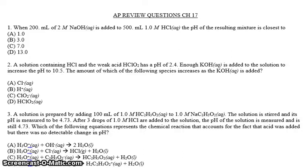This is the AP review questions for Chapter 17 test. In the previous one, we talked about Chapter 16, which included acids and bases. Here, we're doing Chapter 17, which adds acids and bases together to create some sort of neutralization scenario. Question one says, when 200 mL of 2 M sodium hydroxide solution is added to 500 mL of 1 M HCl solution, the pH of the resulting mixture is closest to.